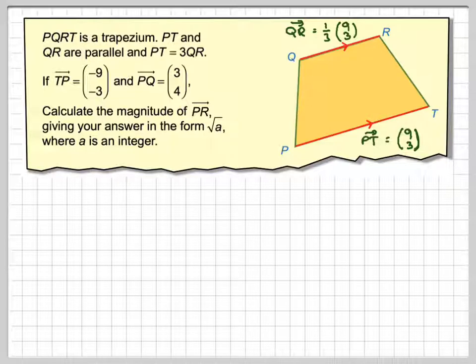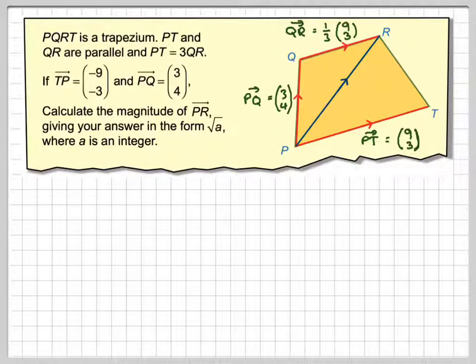And we are given that PQ is (3, 4). Now we need to find the vector PR and then find its magnitude. To find PR we can do PQ plus QR.